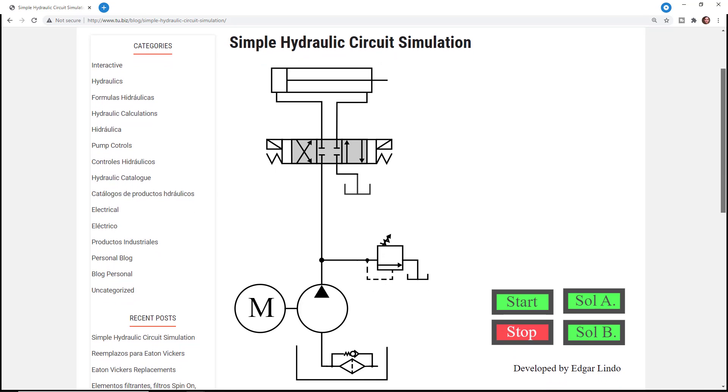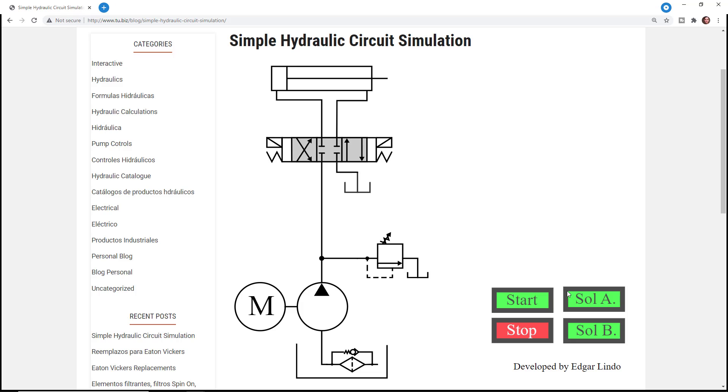What will you do over here? This is an interactive animation. As you can see, you have a Start, Stop, Solenoid A, and Solenoid B buttons. Right now the A and B is not working, the Stop isn't working either.